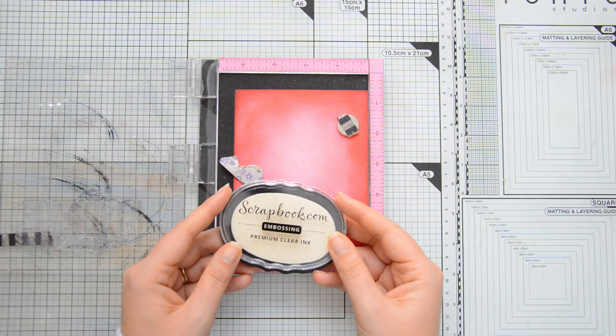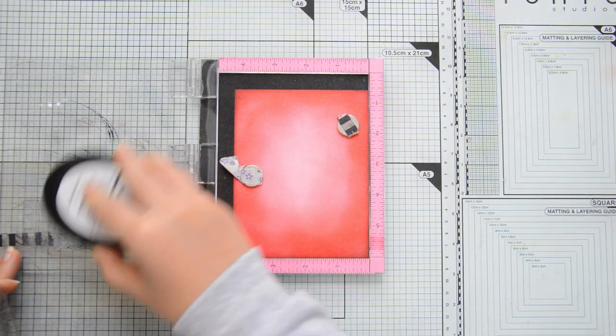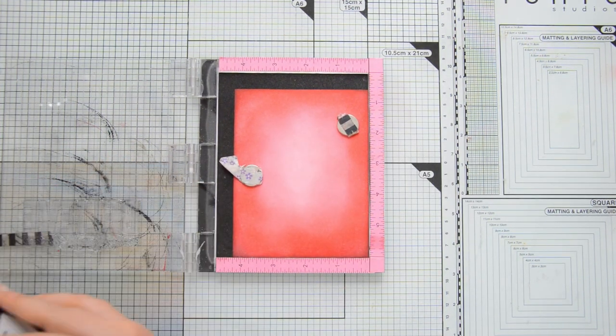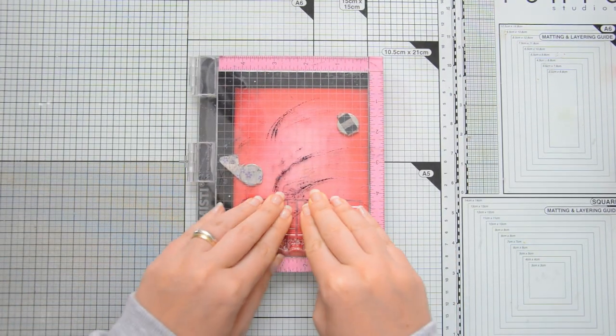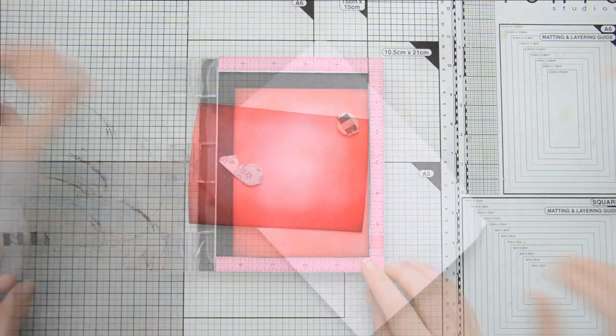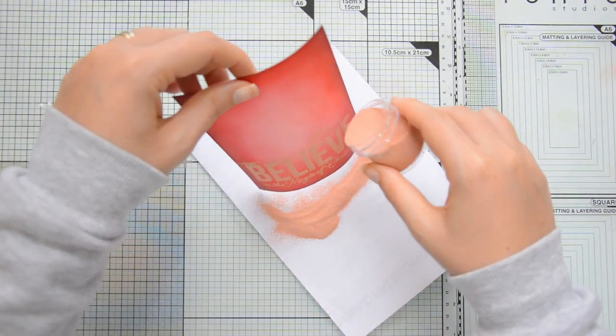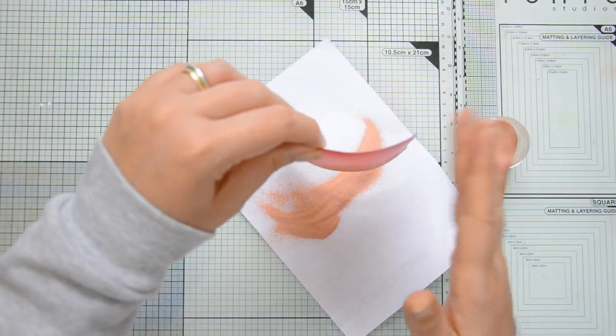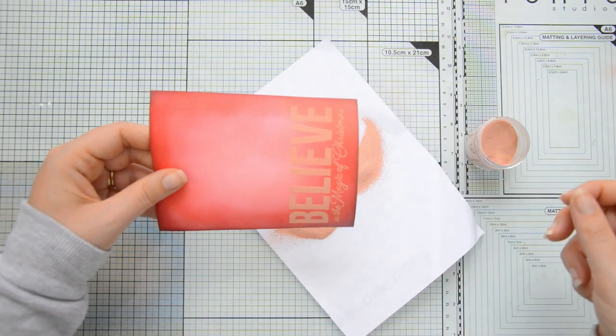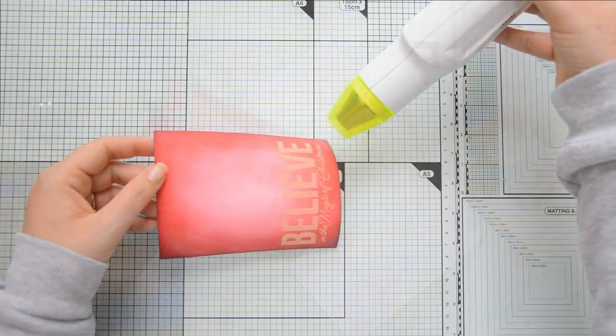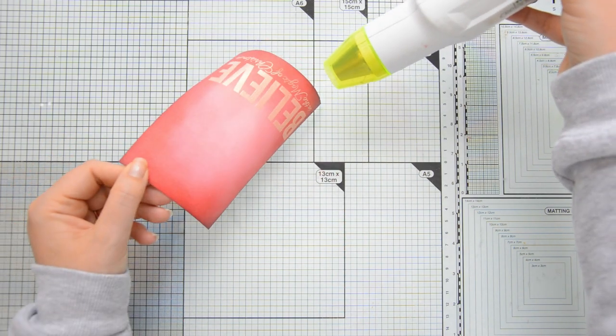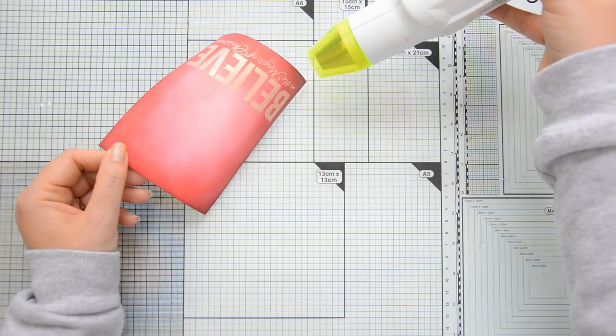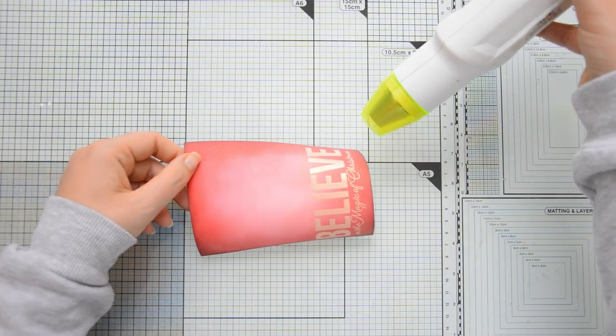The next step was to stamp my sentiment. I used one of the greetings from the scrapbook.com big and bold Christmas sentiments and I'm doing my stamping with some embossing ink because I'll be heat embossing the sentiment with rose gold embossing powder by Lawn Fawn. So you can see I coated the greeting which reads believe in the magic of Christmas with my embossing powder and I am heat setting it with my heat gun.